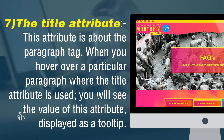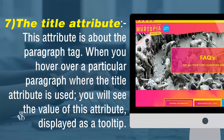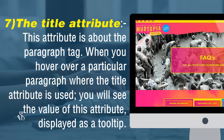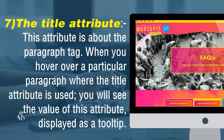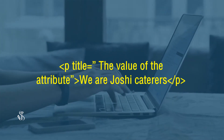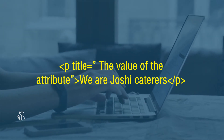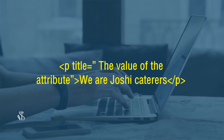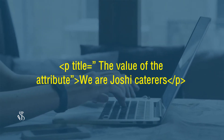The title attribute. This attribute is used with the paragraph tag. When you hover over a particular paragraph where the title attribute is used, you will see the value of this attribute displayed as a tooltip. The syntax is: p title="the value of the attribute". We are Joshi Caterers. Close paragraph.